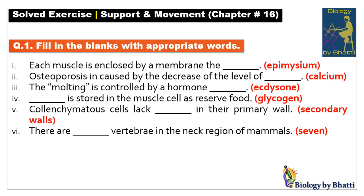This textbook statement is slightly wrong — it should say collenchyma cells lack secondary cell walls, because collenchyma cells are immature and only have primary cell walls. Number six: there are dash vertebrae in the neck region of mammals. Most mammals, except two or three, have seven neck vertebrae — whether it's a giraffe or a mouse. The number is seven; only the size differs.